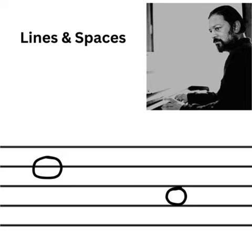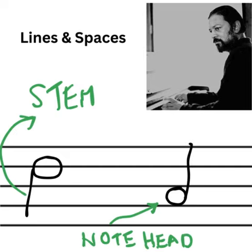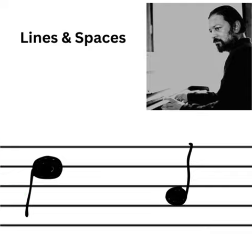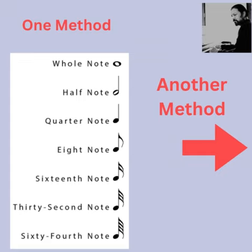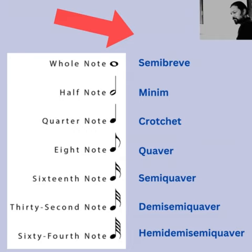Beats may be written on a line, or in a space. There are two methods of naming beats: semi-breve or whole note, minim or half note, crotchet or quarter note, quaver or one-eighth note, semi-quaver or one-sixteenth note, etc.